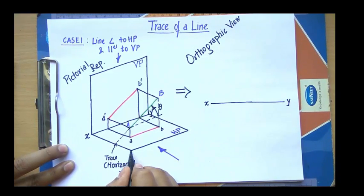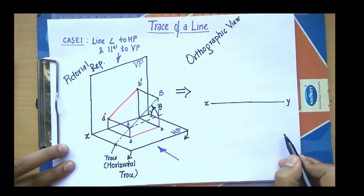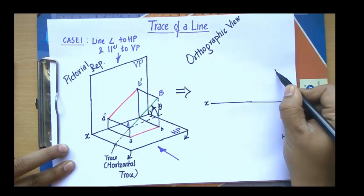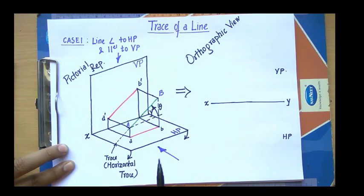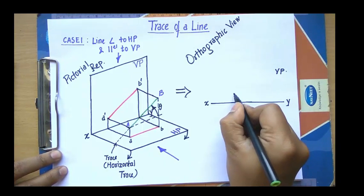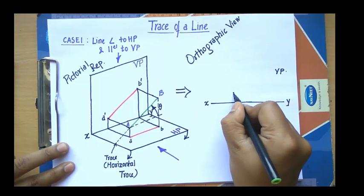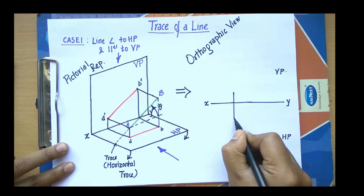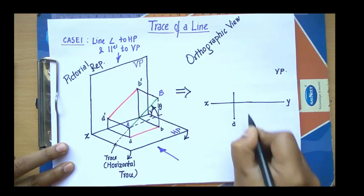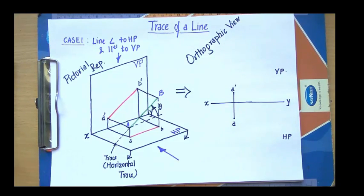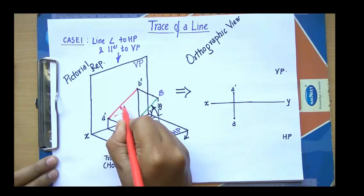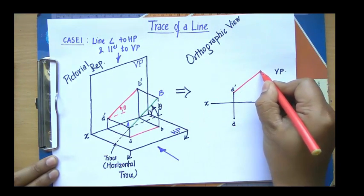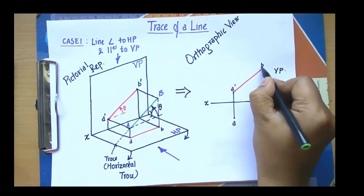When you rotate the horizontal plane 90 degrees in the clockwise sense, below this XY line you'll have the horizontal plane and above this XY line you'll have the vertical plane. Above is where we'll have the front view and below is where we'll have the top view. This is A' and this is A. This inclination is theta.